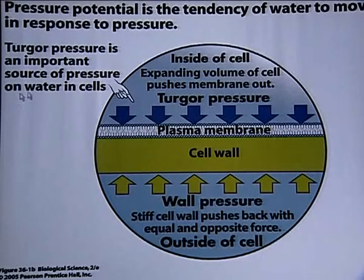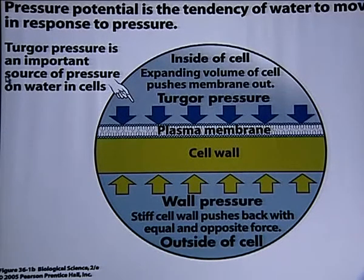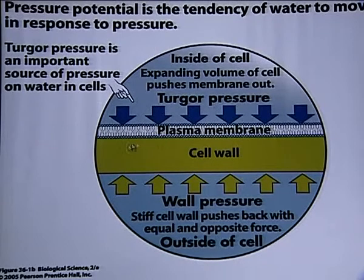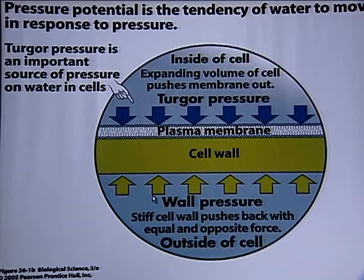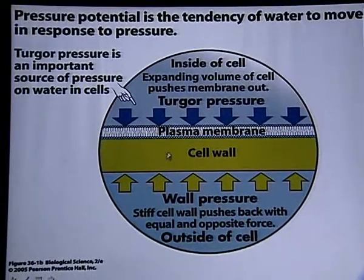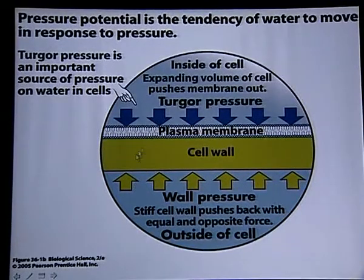Now let's see how water moves. Pressure potential is the tendency of water to move in response to pressure. Turgur pressure is an important source of pressure on water in cells. When water enters and volume increases, turgur pressure pushes on the cell wall, and the cell wall exerts equal and opposite pressure back on the cell. So turgur pressure is always equal to wall pressure.